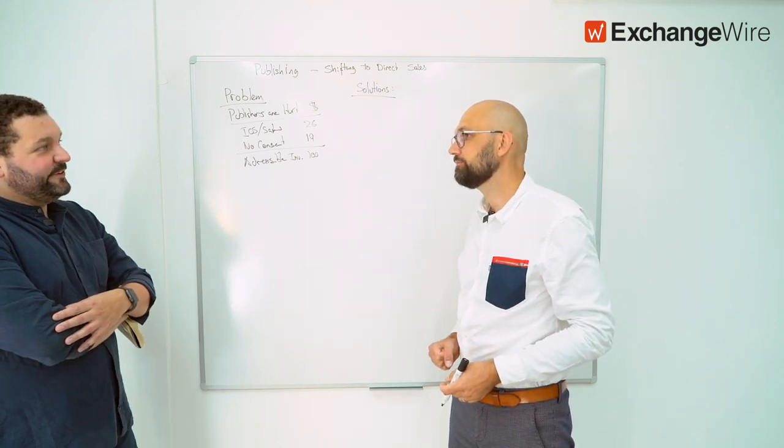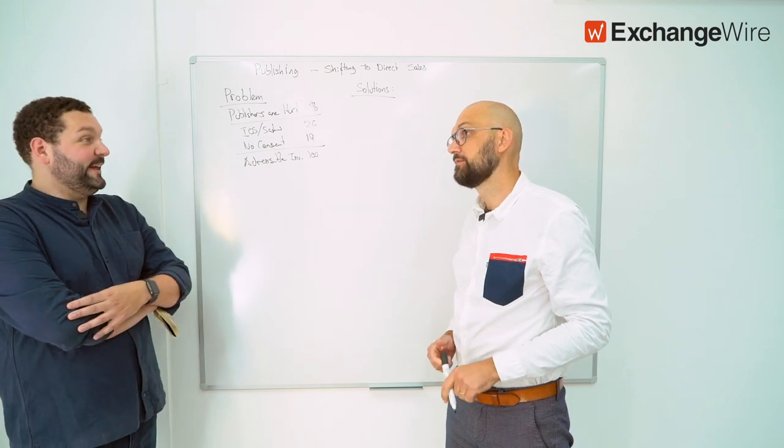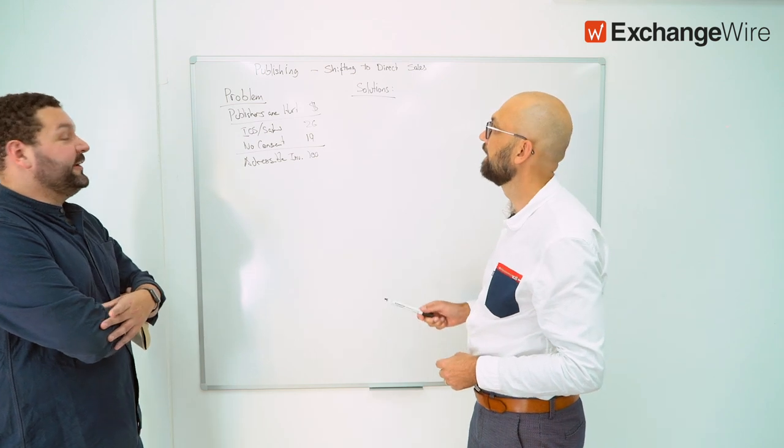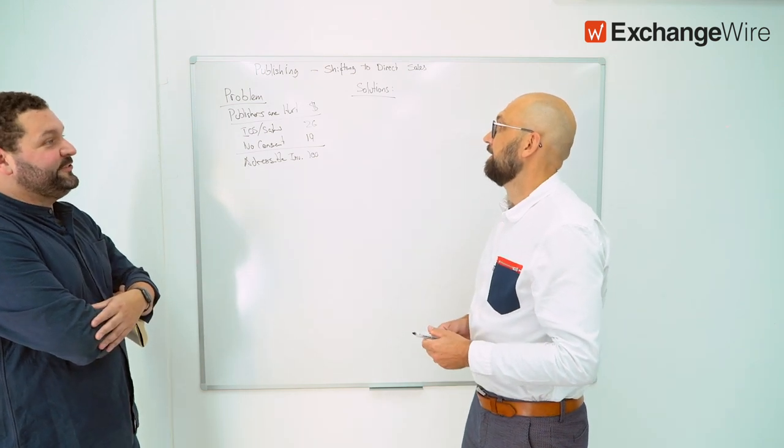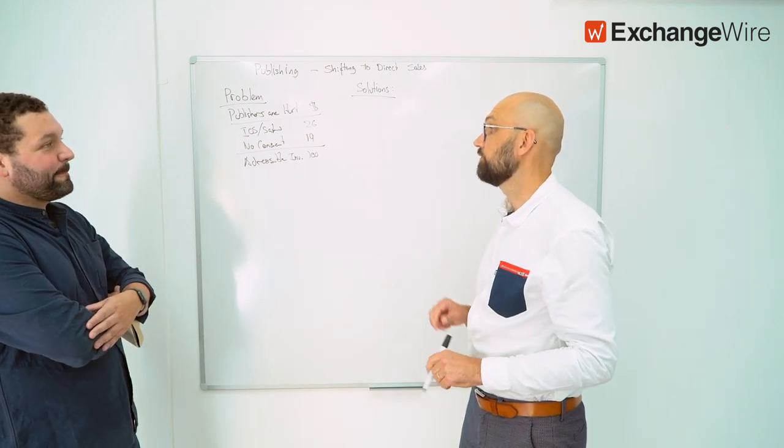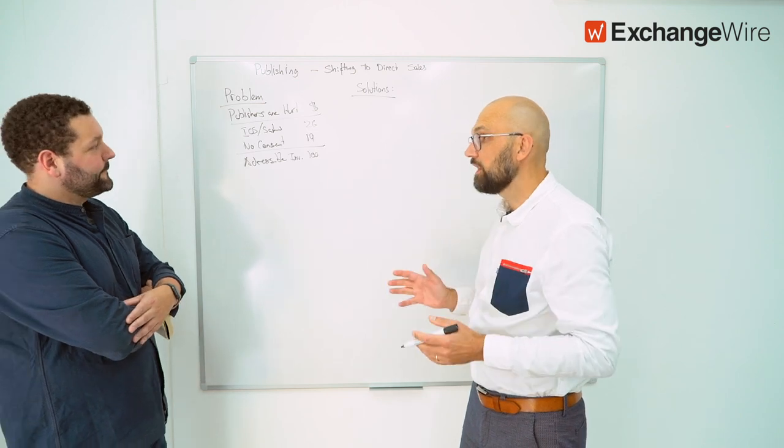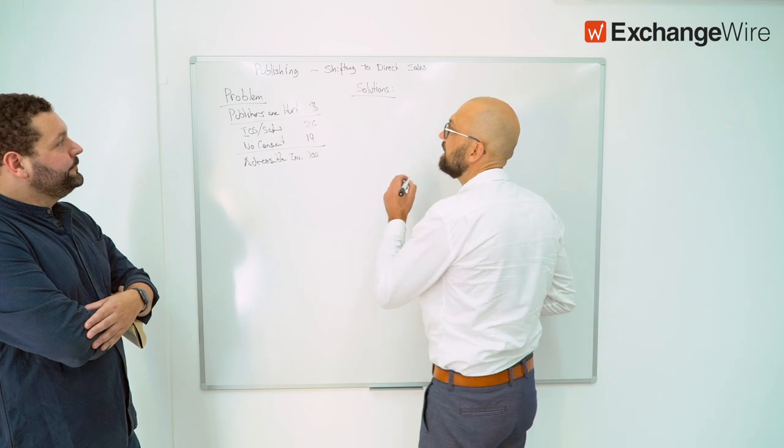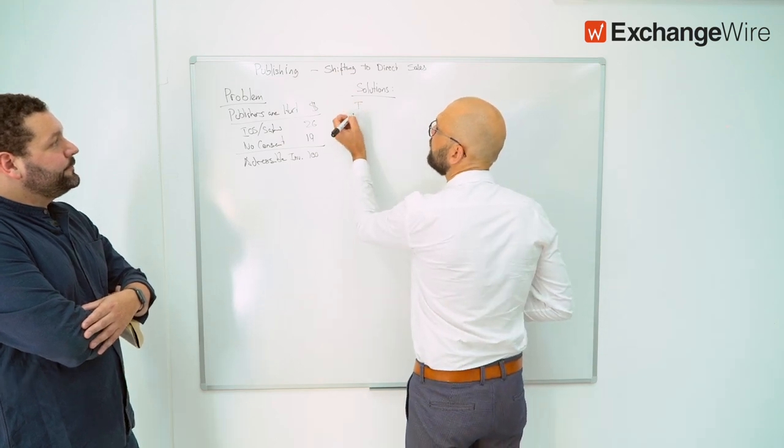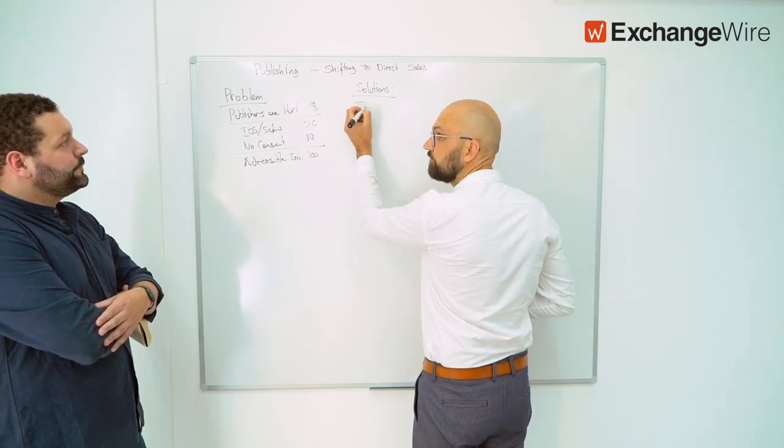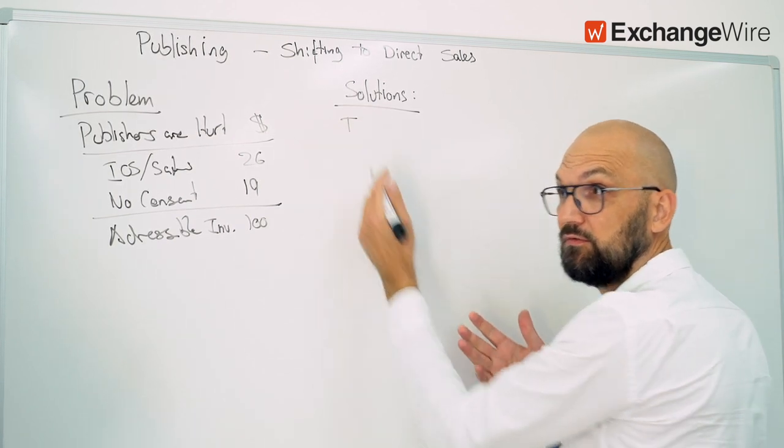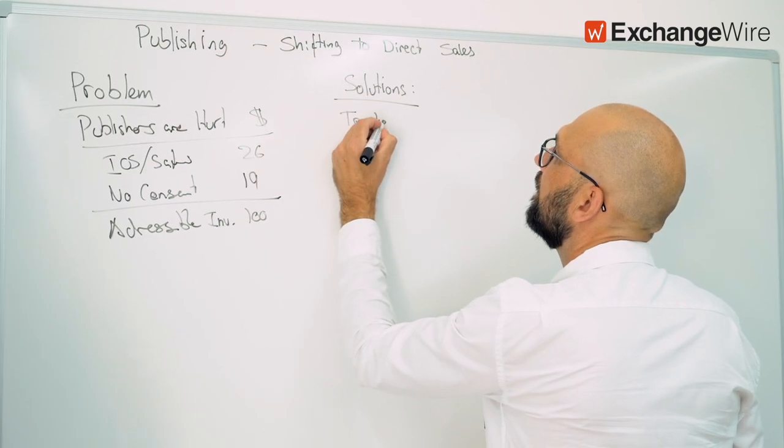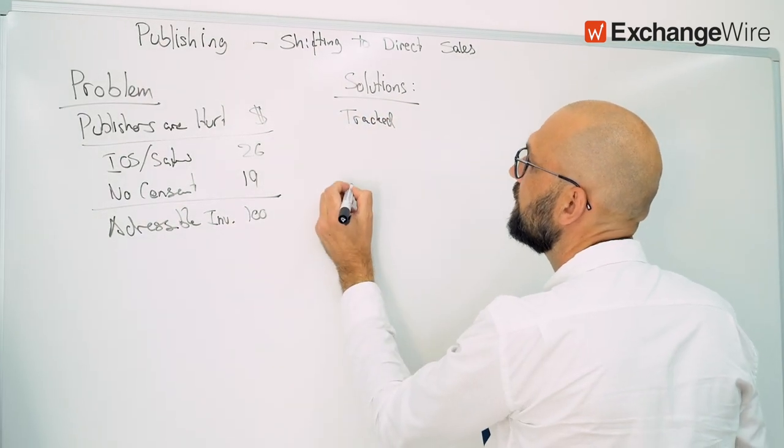That basically means you lose 74% to 81% of your inventory when somebody hits the no consent button or they use a Safari browser. These are massive figures and obviously a huge issue for the industry at large. The solutions that have been tested by publishers are divided into two different categories: either they are tracked solutions where you keep tracking consumers, or you have untracked.